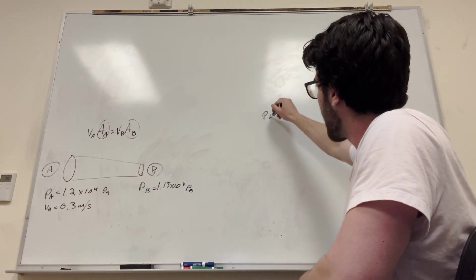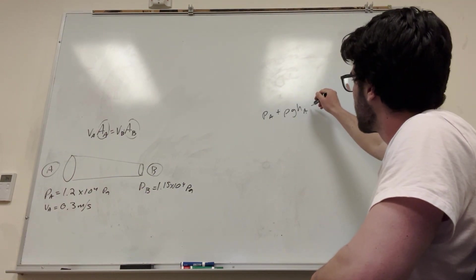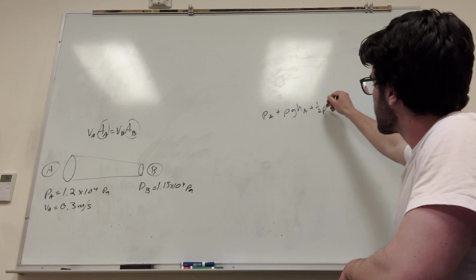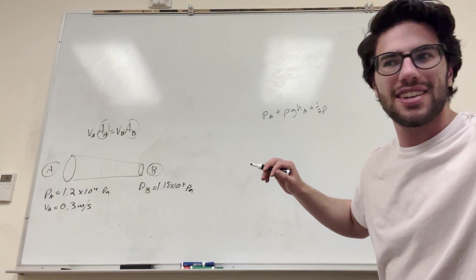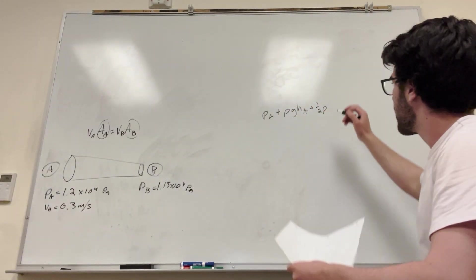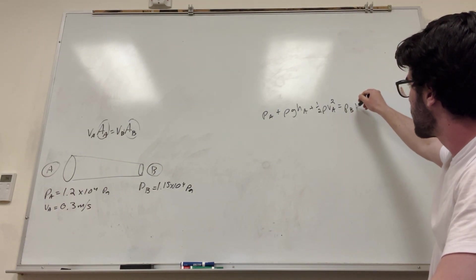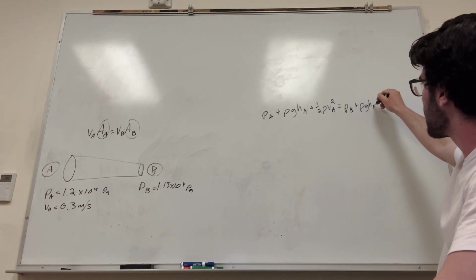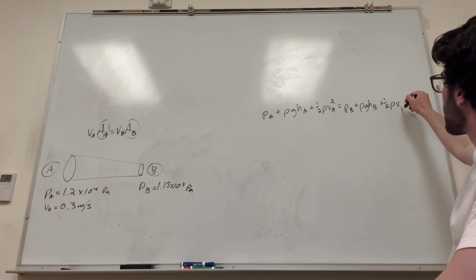Okay, so Bernoulli's equation is pressure at A plus density, gravity, height at A plus one-half density velocity at A squared is equal to pressure at B plus density, gravity, height at B plus one-half density, velocity of B squared.